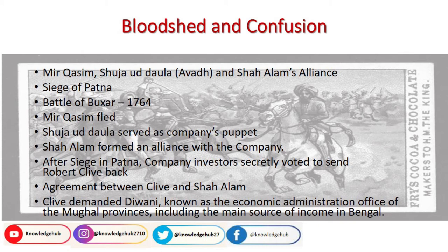Robert Clive got to know about it and all East India Company employees were furious. In return, they fought another battle — the Battle of Buxar — fought from the British side by Hector Munro. It is also a very famous war because the British and East India Company won this battle. It was such a big bloodshed that Mir Qasim had to flee for his life. Shuja ud-Daula decided to serve as the company's puppet, and Shah Alam formed an alliance with the company.